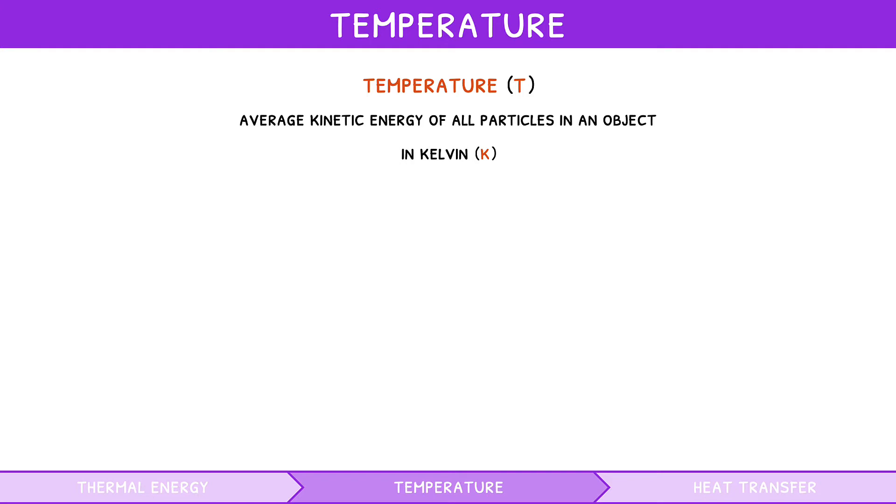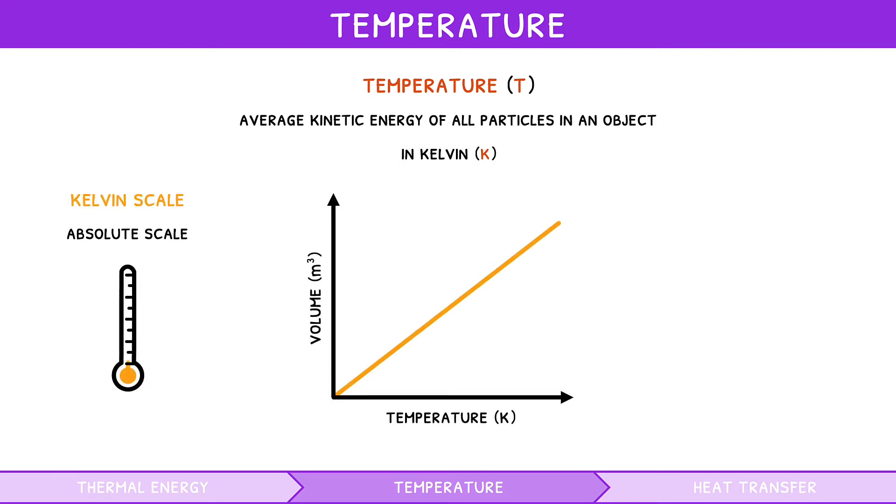Before discussing the relationship to thermal energy, we will explore what a Kelvin is and how it relates to Celsius. The Kelvin scale is considered an absolute scale of temperature, meaning zero Kelvin is the coldest possible temperature, i.e. absolute zero.